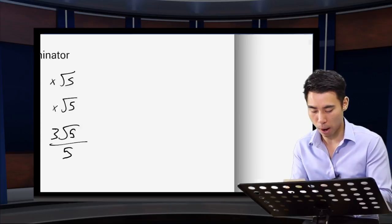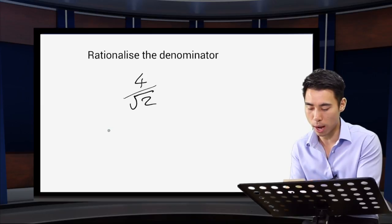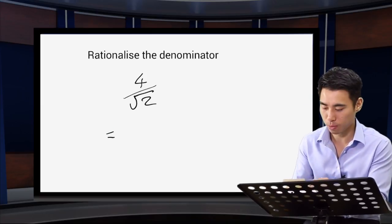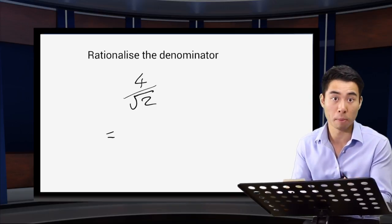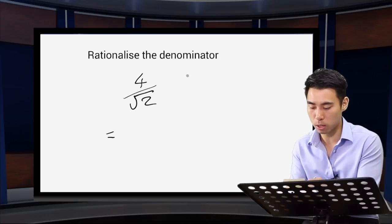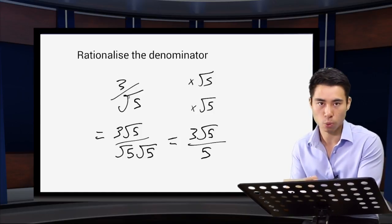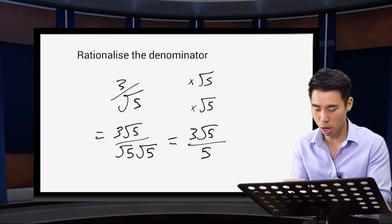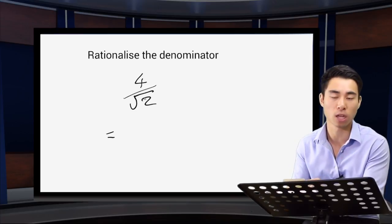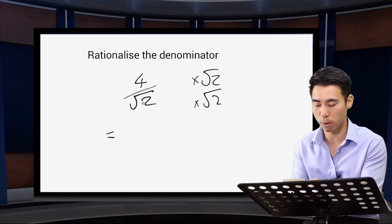Just another thing to bear in mind: if we have 4 over root 2, you should notice straight away that some of these numbers have factors of one another, so you should be thinking there's a chance you might need to simplify the resulting fraction. We do the same thing again — rationalising the denominator like in our previous example. We multiply top and bottom by root 2, because that's just a surd on the bottom.